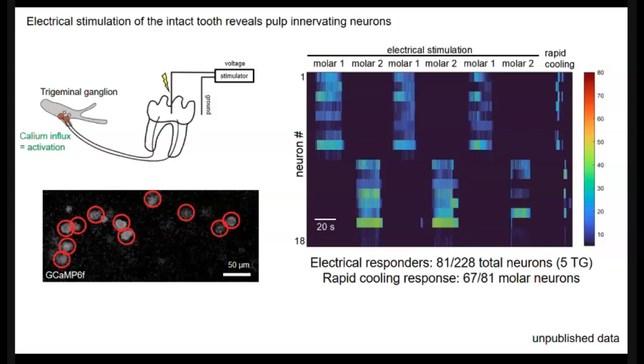So one other thing I'd like to point out here is that molar neurons typically respond to electrical stimulation of only one tooth. So there's this larger turning pattern because we're stimulating the first molar then the second, and back to the first, and so on and so forth. So this is consistent with our published study that suggests that each pulp is innervated by its own set of neurons. It's also important to note that we have additional confidence that we're looking at the pulp neurons because most of these also respond to rapid cooling. And that's a pulp sensitivity test used by dentists, which I'm aware of clinically as well.